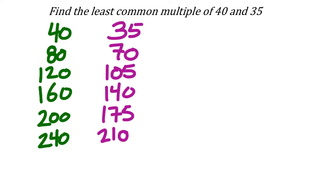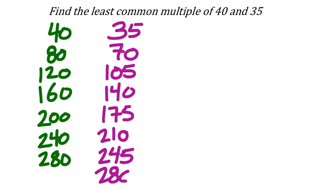Continuing: the next multiple of 40 is 280, and adding another 35 to 245 also gives 280. The green 280 and the purple 280 match, and there are no matches earlier than that. So the least common multiple of 40 and 35 is 280.